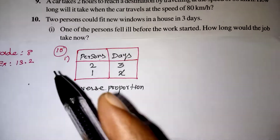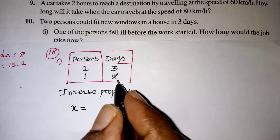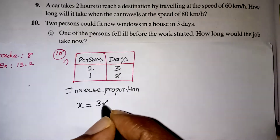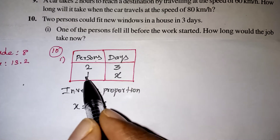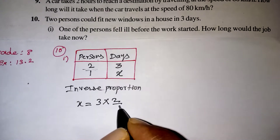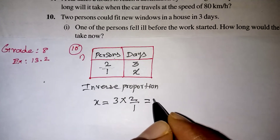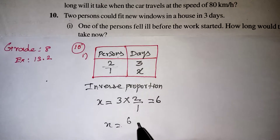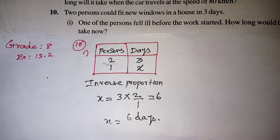Definitely this will come under inverse variation, or inverse proportion. So for inverse proportion we have a shortcut to find the answer. First take the variable x, then write the number given along with the variable, that is 3, multiplied by. The other box is filled with 2 and 1, so write it as the fraction 2 by 1. Denominator 1 you can leave, so 3 times 2 is 6. So x equals 6 days is your correct answer.